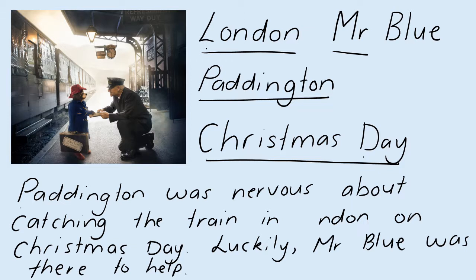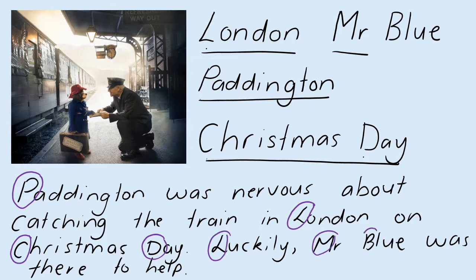Now, pause this video for a moment. Have a look through my sentence — I want you to find the capital at the beginning of each sentence, the capital for a geographical location, the capital for a title, and also for a special event. Here are the capitals you should have found: Paddington — the start of a sentence and also a proper noun. Here is the capital letter for London, which is a geographical location. Here are the capital letters for my special event, Christmas Day. A capital to start the new sentence, and a capital for the title Mr. Blue.